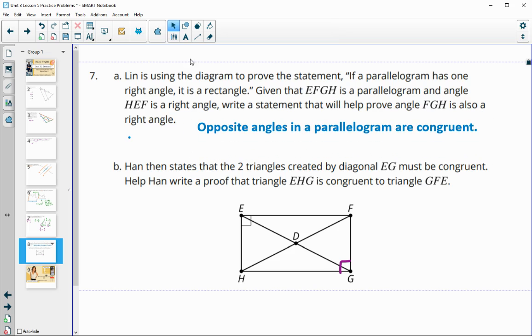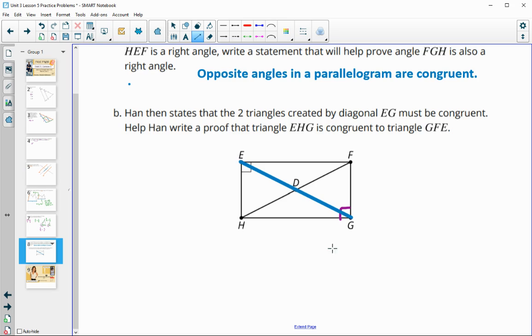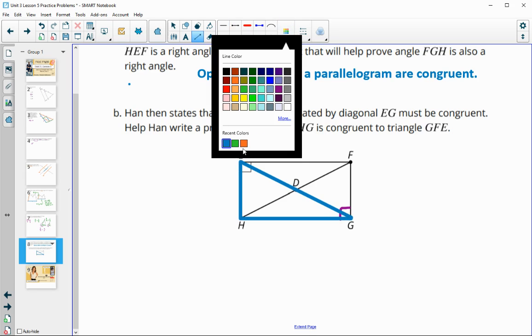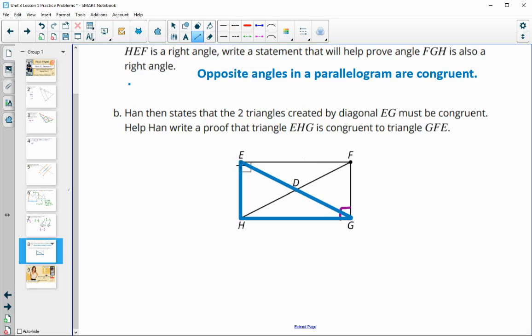Then it says that Hahn states that the two triangles created by diagonal EG are congruent. So let's help him write a proof. So we're trying to prove that this triangle down here is congruent to this triangle up here. And how would we do that? So a couple of things just as we start looking into this. So things that we know, before we start writing it out.